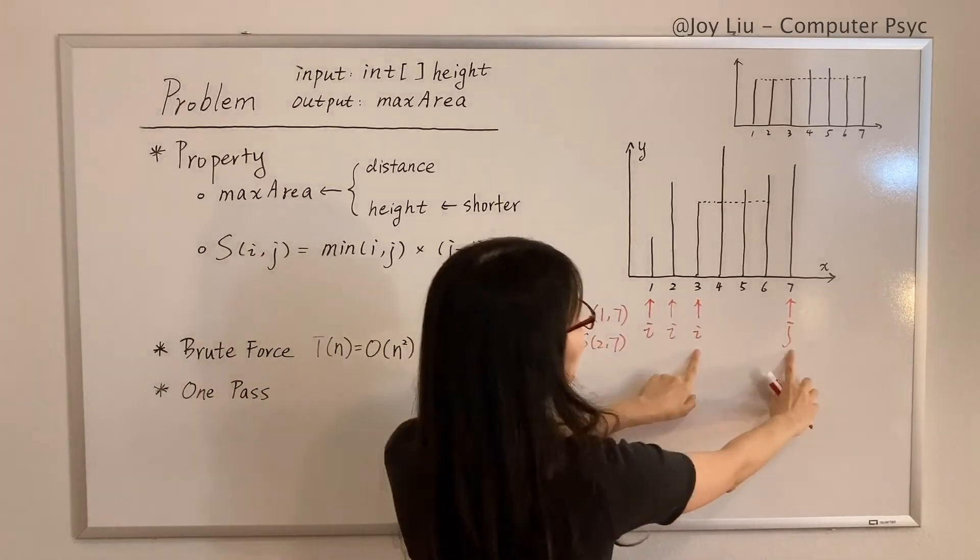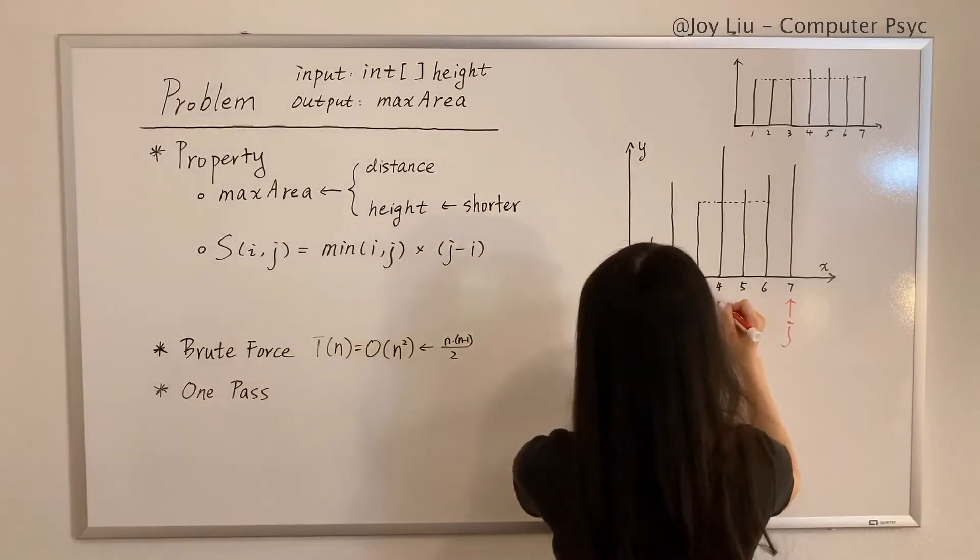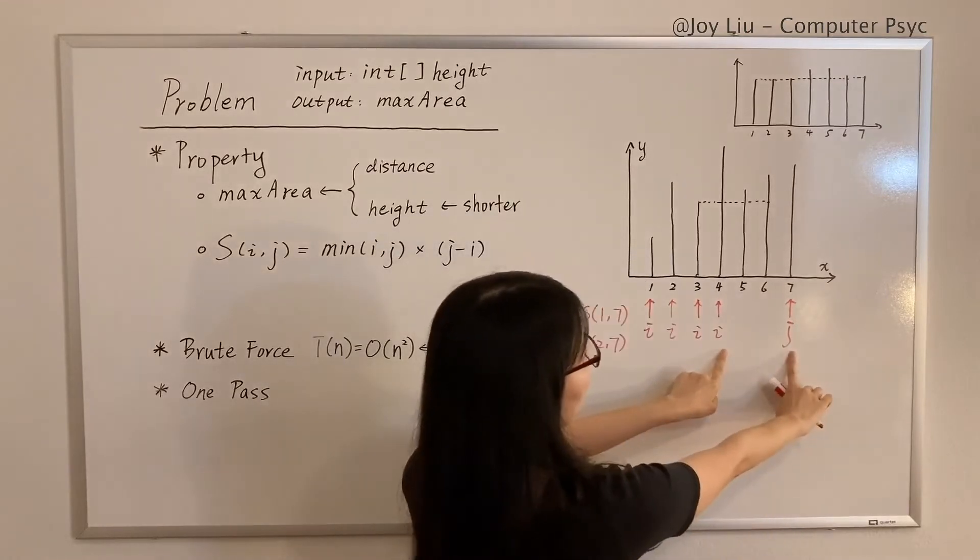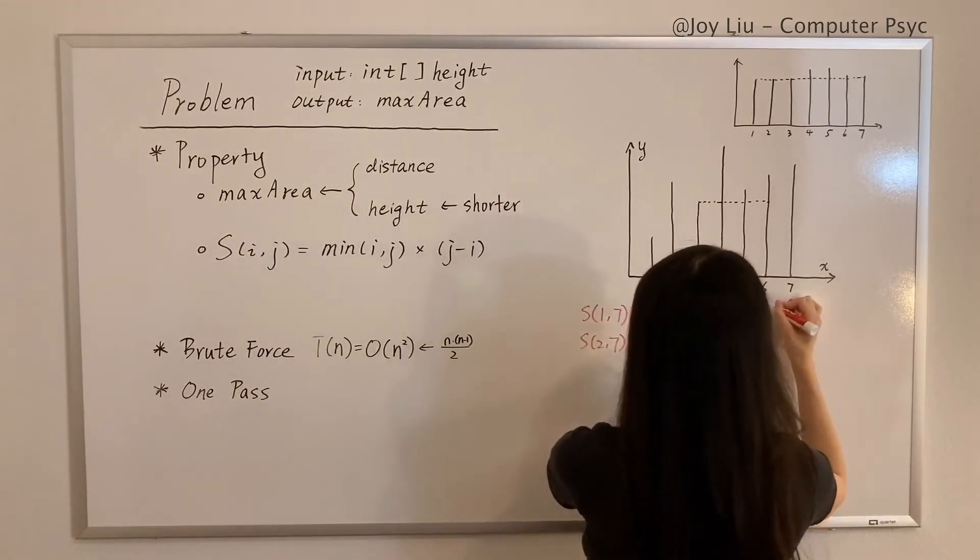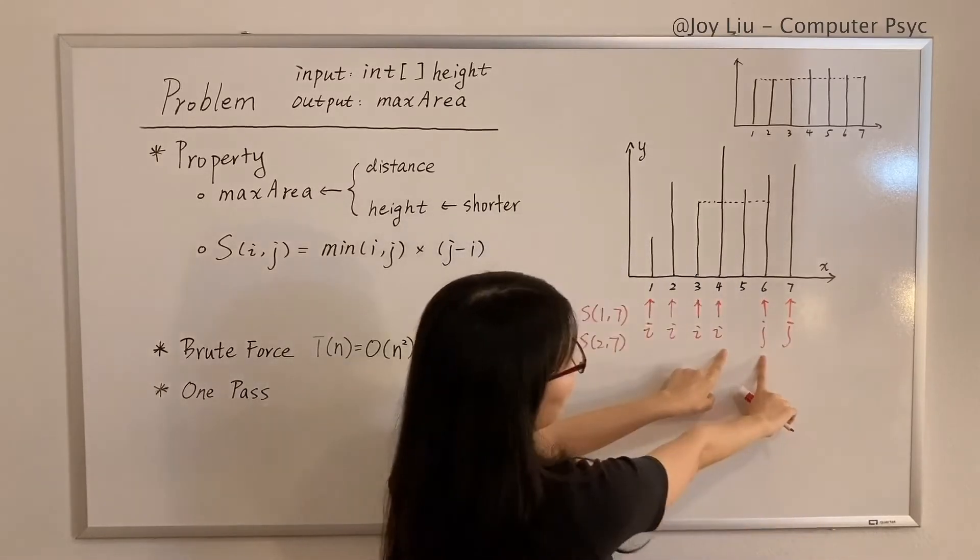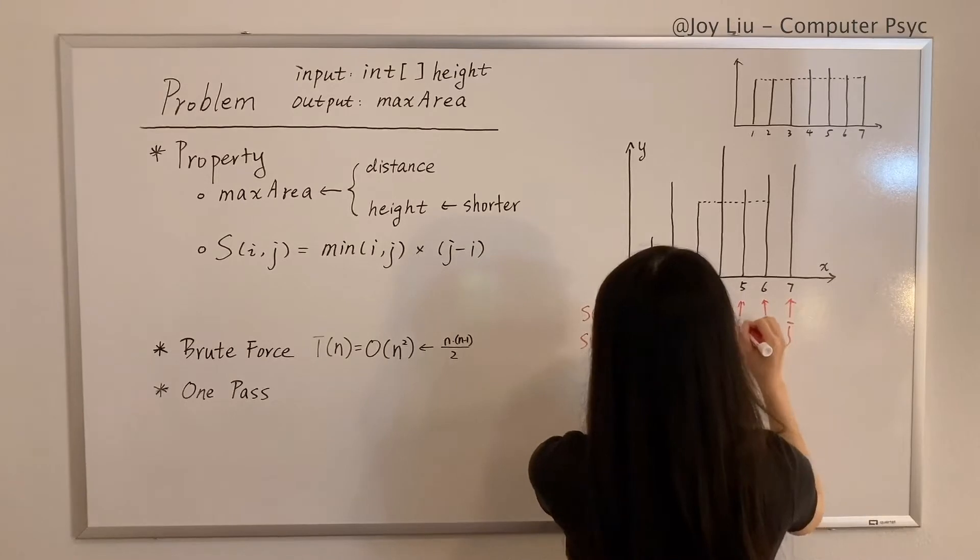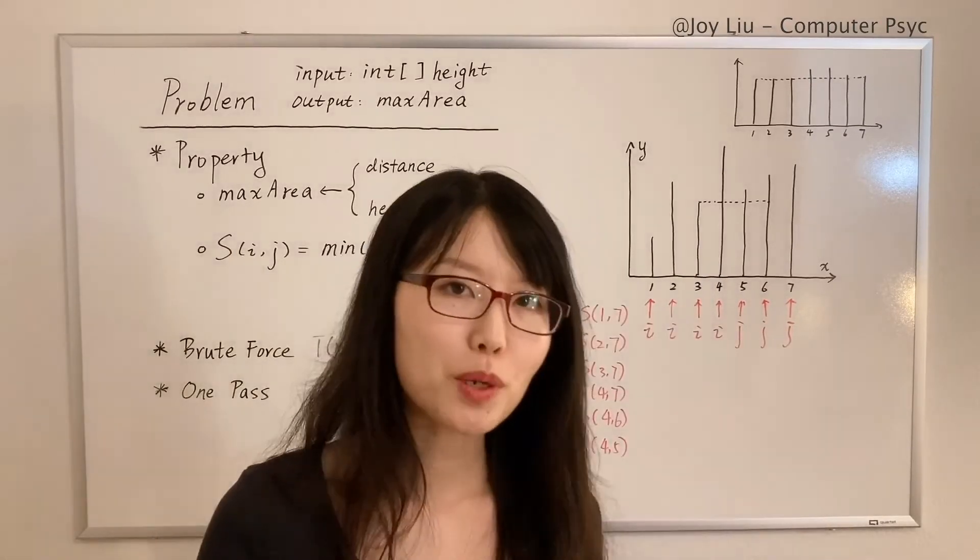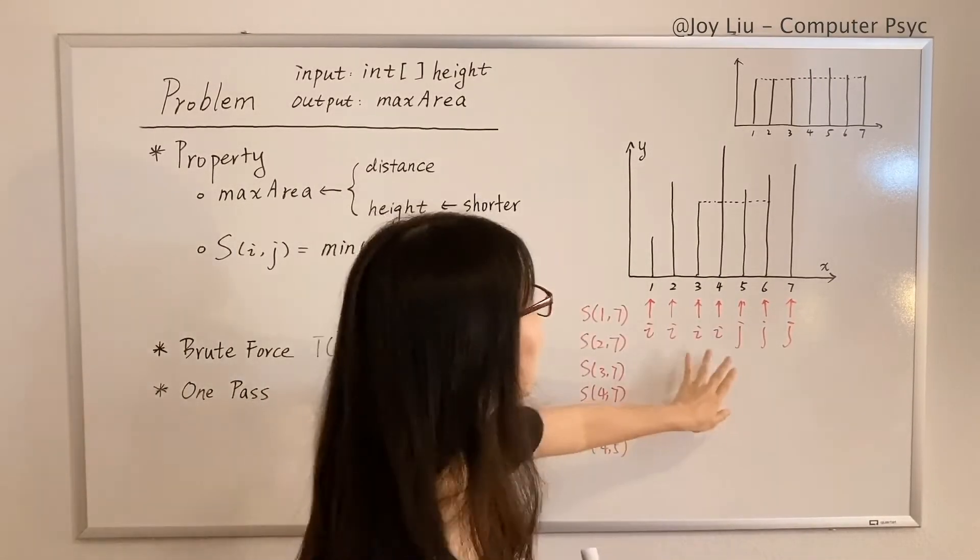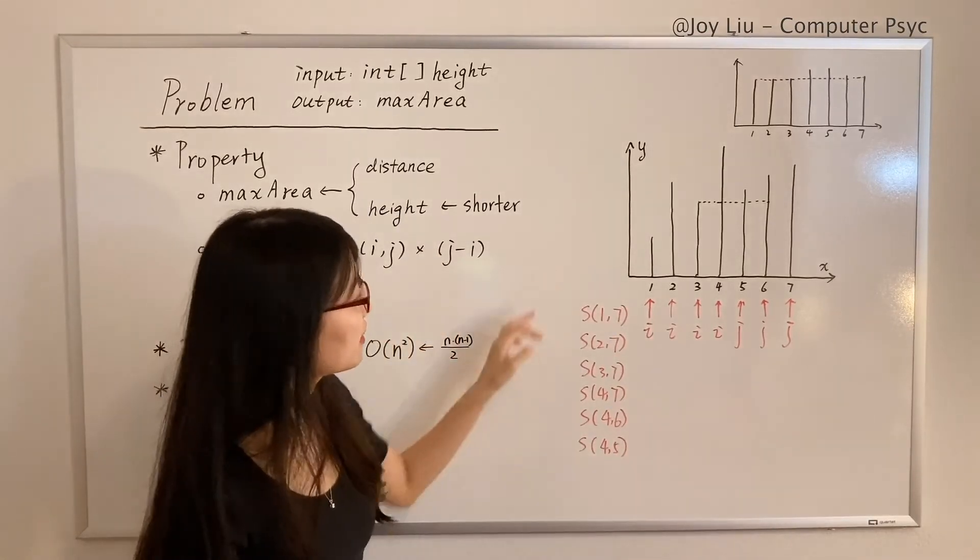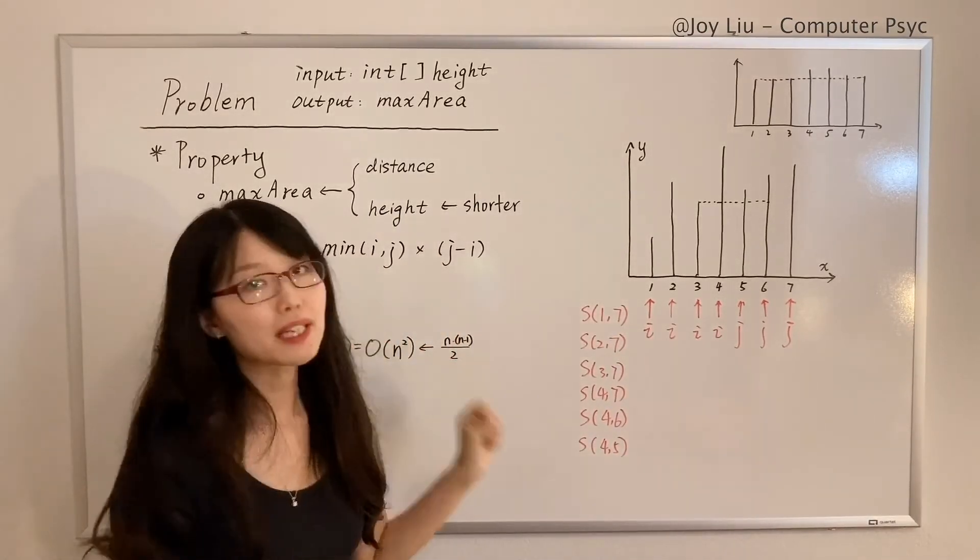For example, in this problem, what is the next one? If you compare two and seven, okay, still move i because two is shorter than seven. And (3,7), i. And (4,7), j. (4,6), j.